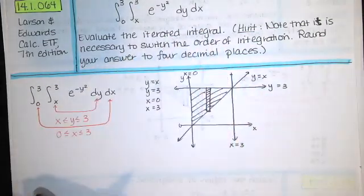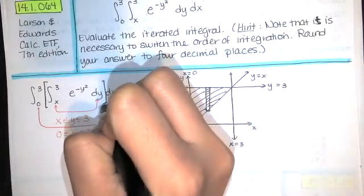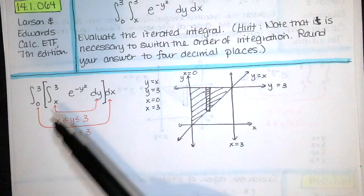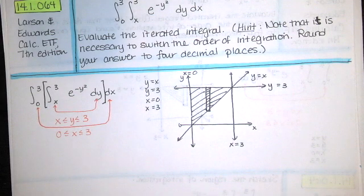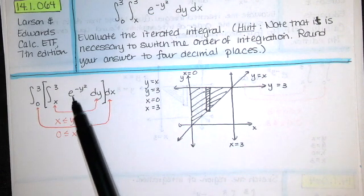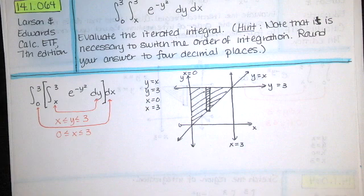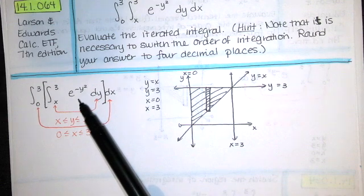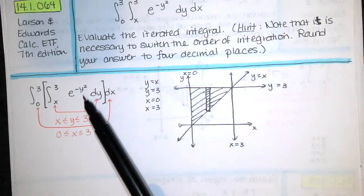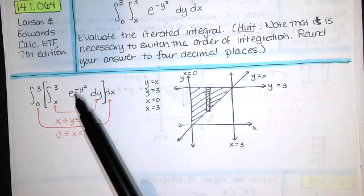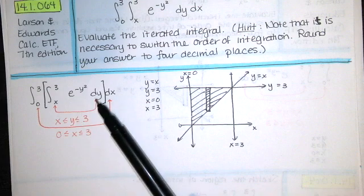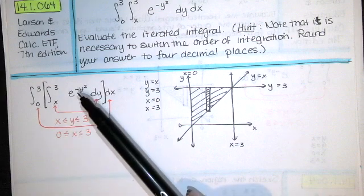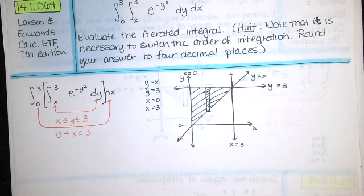If we're evaluating this iterated integral, typically we start on the inside and work our way out — take the antiderivative first, substitute in y = 3 and y = x, and subtract. But that's not possible this time. Notice that we've got e^(-y²), and all of the methods from calculus 1 and 2 for computing this antiderivative fail to work. You can't use basic rules, substitution doesn't work, integration by parts doesn't work. There isn't a function whose derivative gives you e^(-y²).